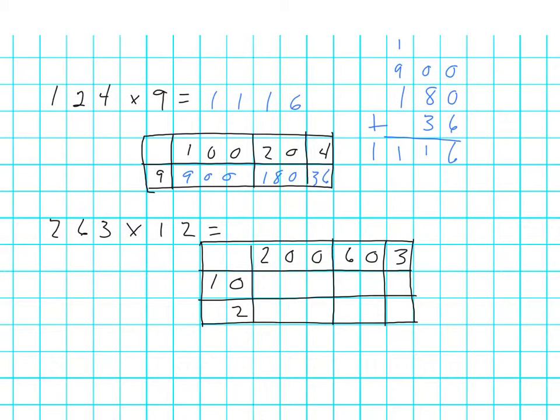Let's go to the next question. We've got 263 multiplied by 12. Again I've got the hundreds, tens, units and the tens and units here. So 10 times 200 is going to be 2,000. 10 times 60 is going to be 600.